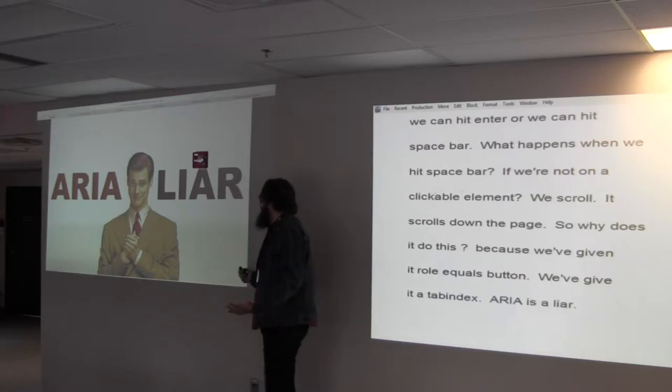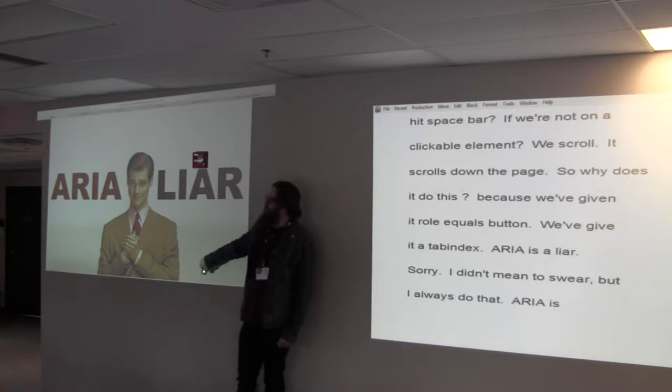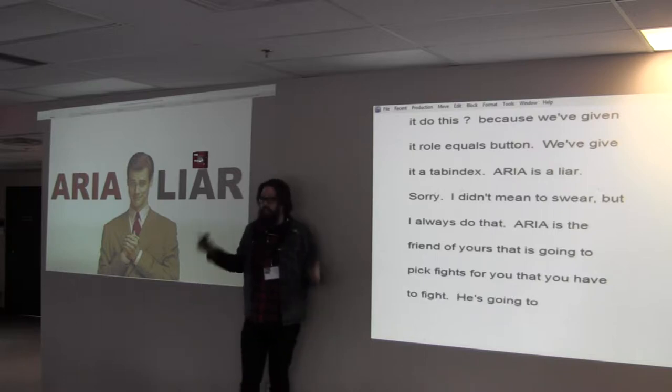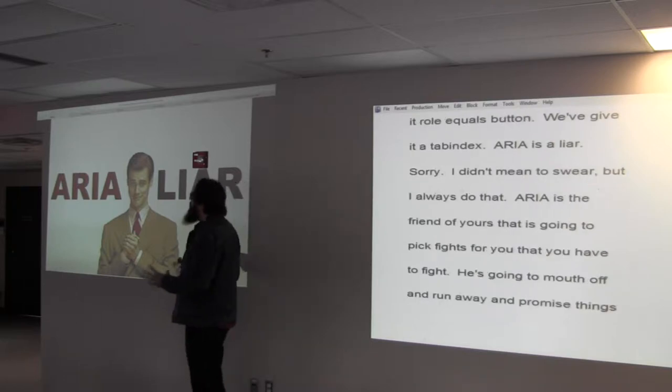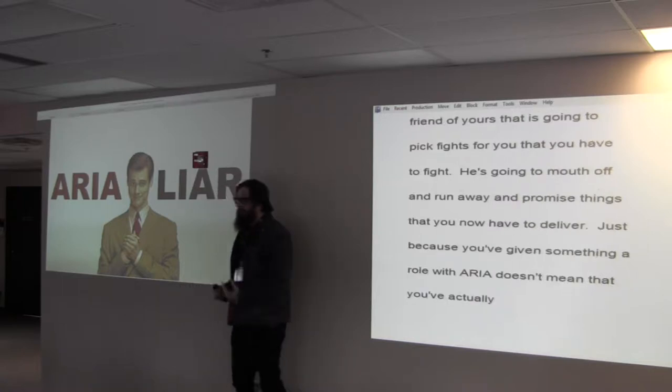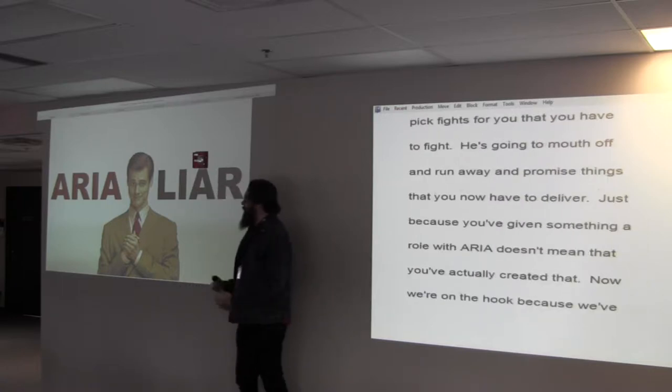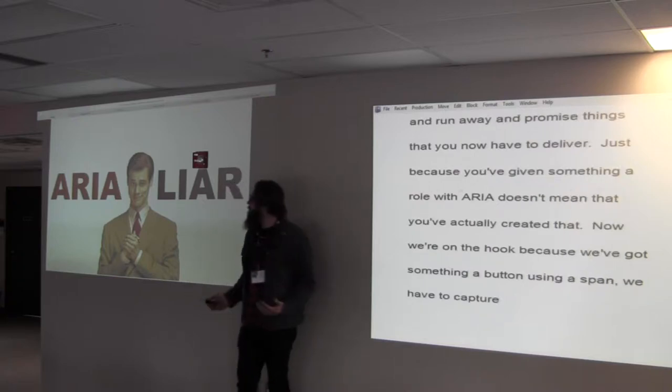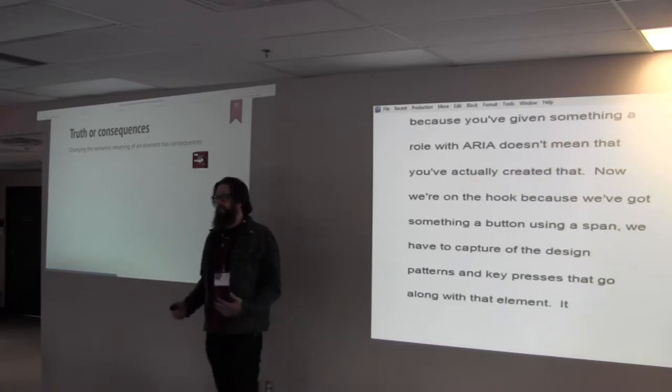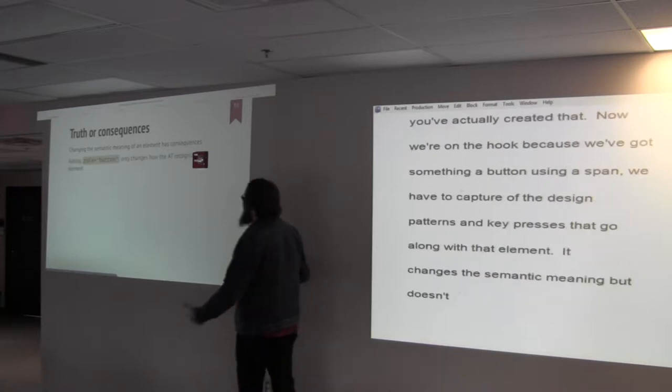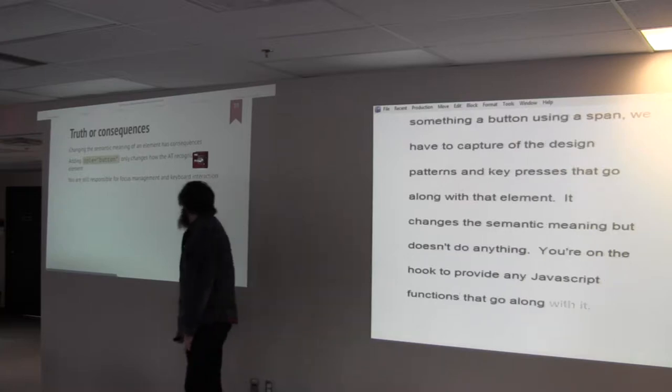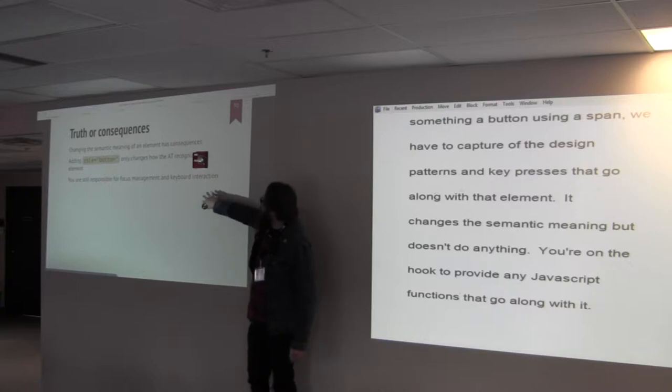Worst case scenario, but if we do this, we're going to land on the button. It's going to be called a button. We can land on it if we have tab index. It's identified as a button because of role equals button. We're going to land on it, and there's two ways we can submit this button. We can hit enter, or we can hit space bar. Now, what happens when we hit space bar if we're not on a clickable element? We scroll. It just scrolls the page. Why does it do this? Because we've given it role equals button. So now it's a button. We've given it the tab index. The reason why it does this is because ARIA is a liar.